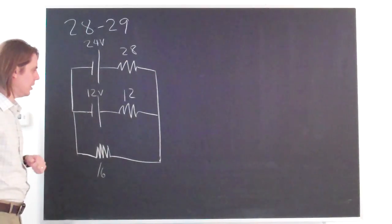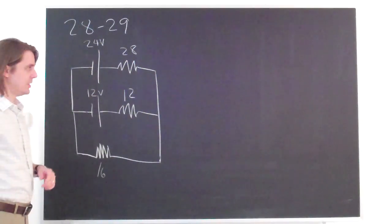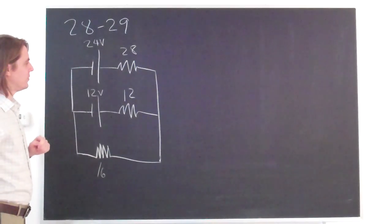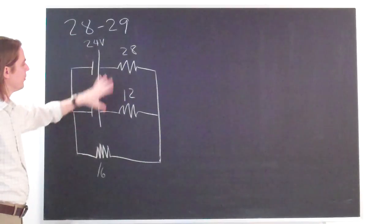And the question is simply what is the current in each resistor and what is the power delivered to each resistor? So this is a case where we apply Kirchhoff's rules to figure out all these unknowns.